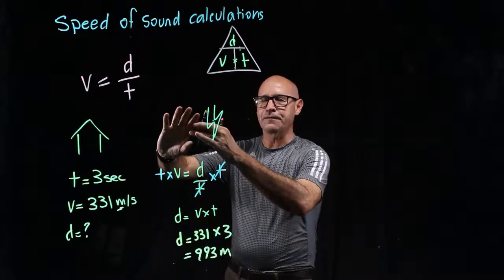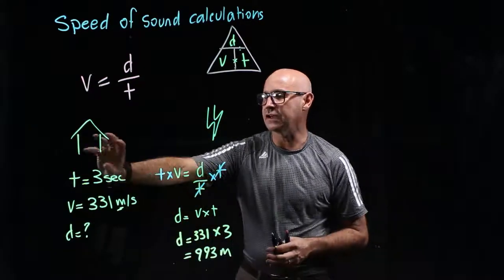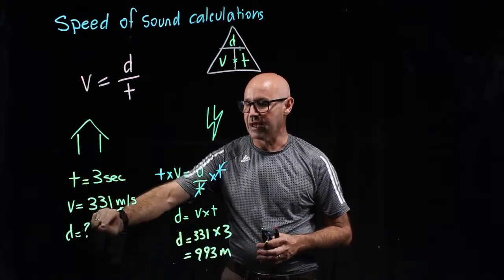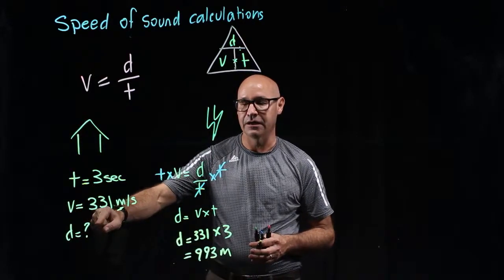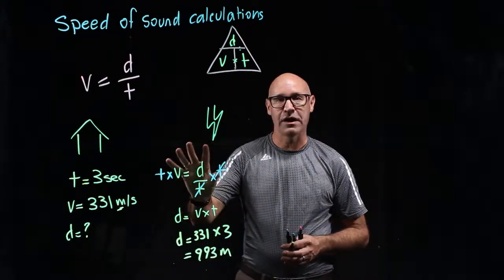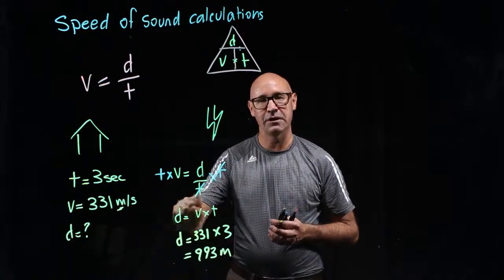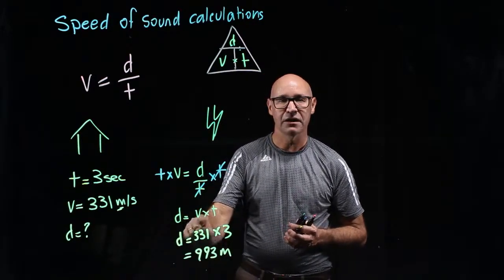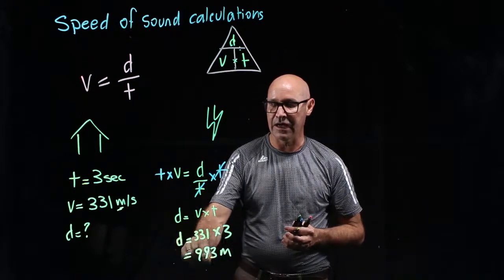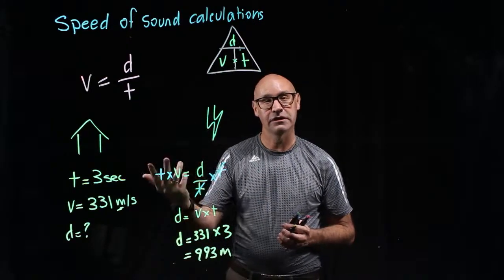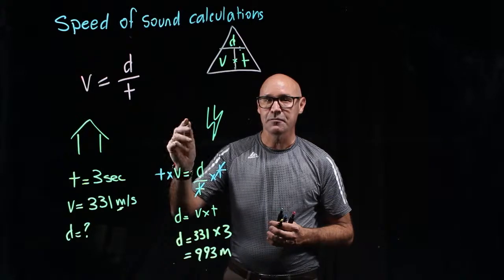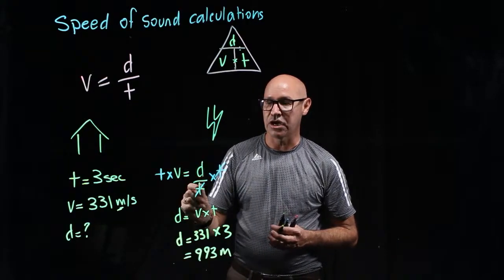So, we defined the problem. We identified what we knew and what we wanted to find out. We then found the correct formula. We moved the formula around so that it was the way we needed it. We then inputted the values and worked out our answer and then we did our reality check. See, plan, do, check.